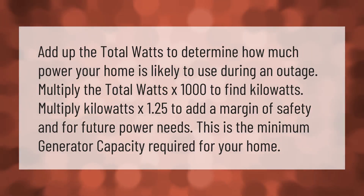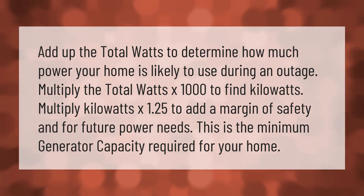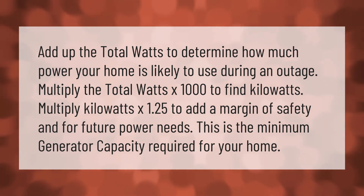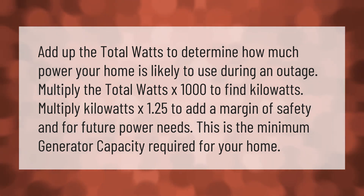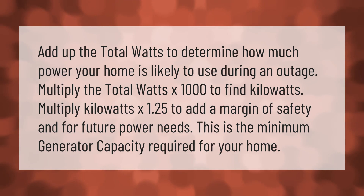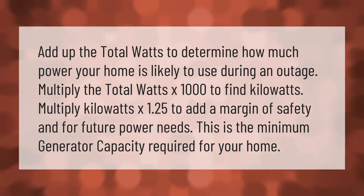Add up the total watts to determine how much power your home is likely to use during an outage. Multiply the total watts by 1,000 to find kilowatts, then multiply kilowatts by 1.25 to add a margin of safety and account for future power needs. This gives you the minimum generator capacity required for your home.